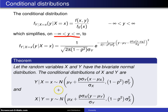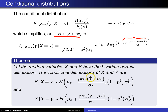Its mean is mu sub y plus rho times x minus mu x, all over sigma x. This quantity is the mean of the conditional distribution, and not surprisingly, it involves little x as a linear function.